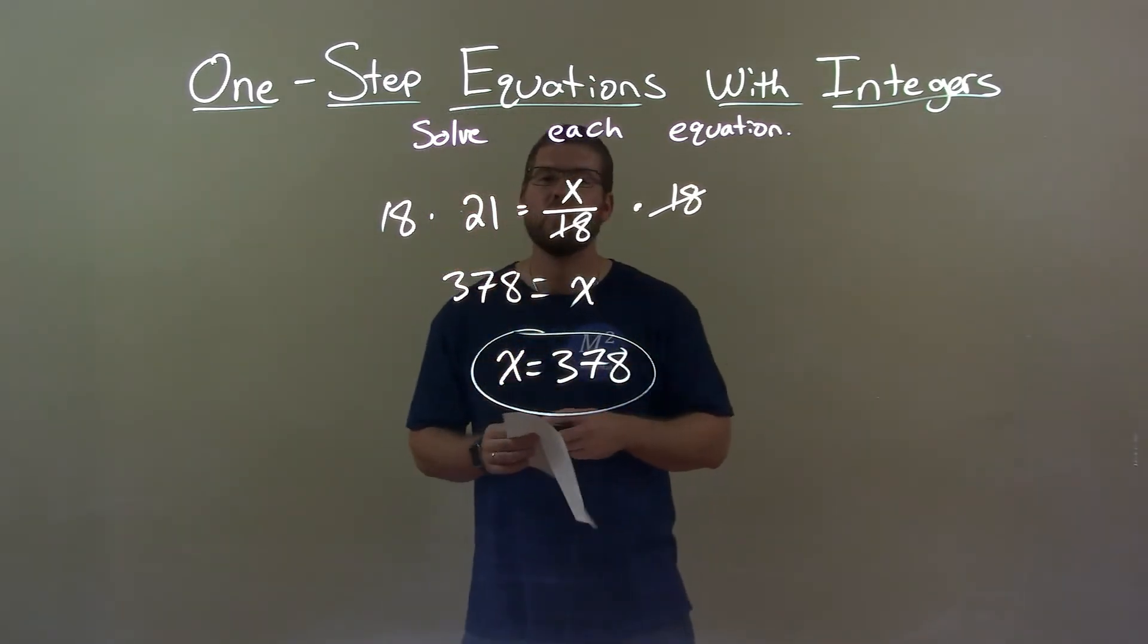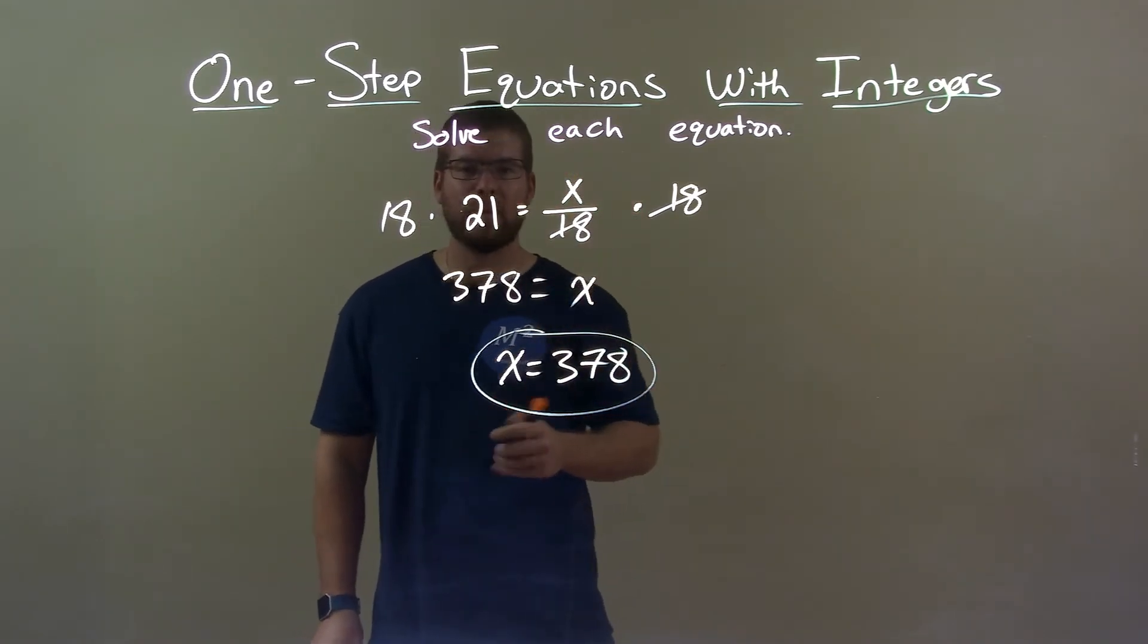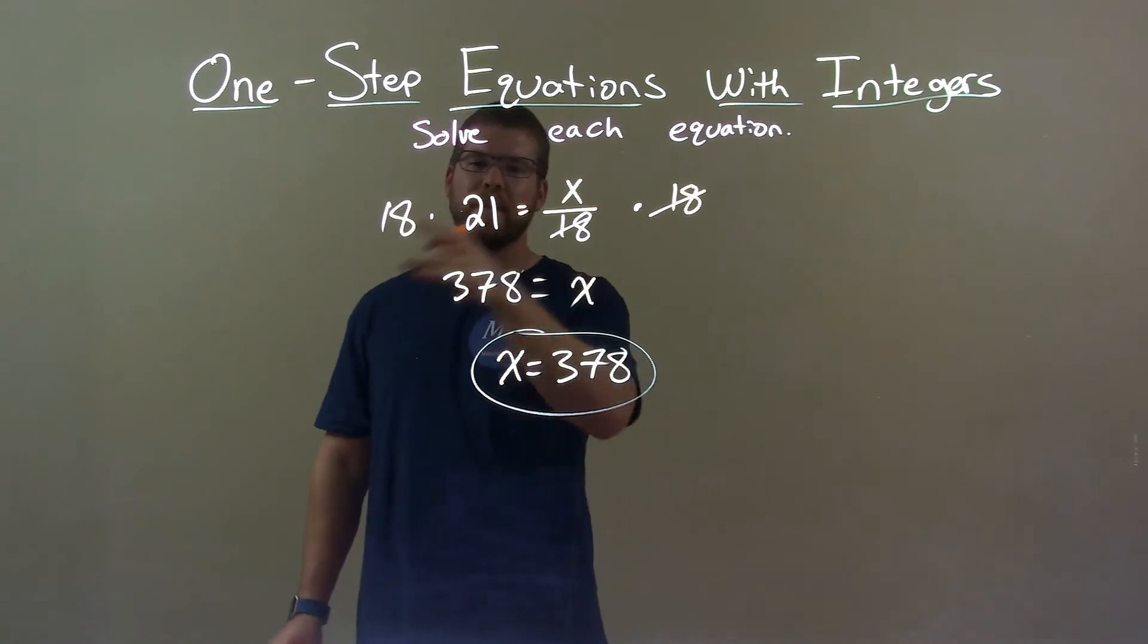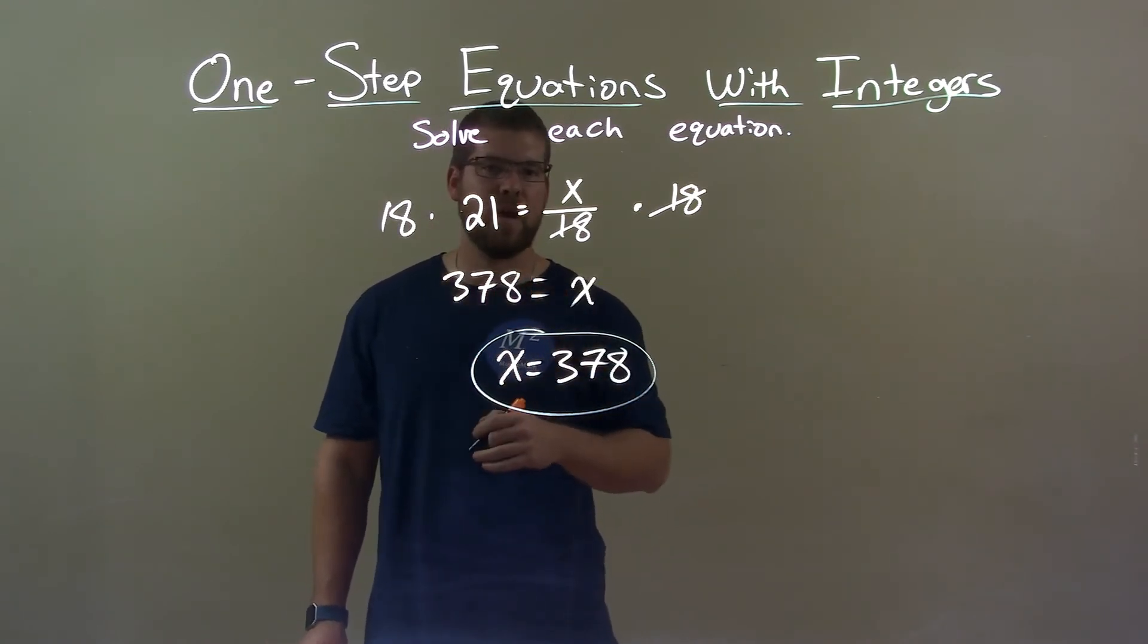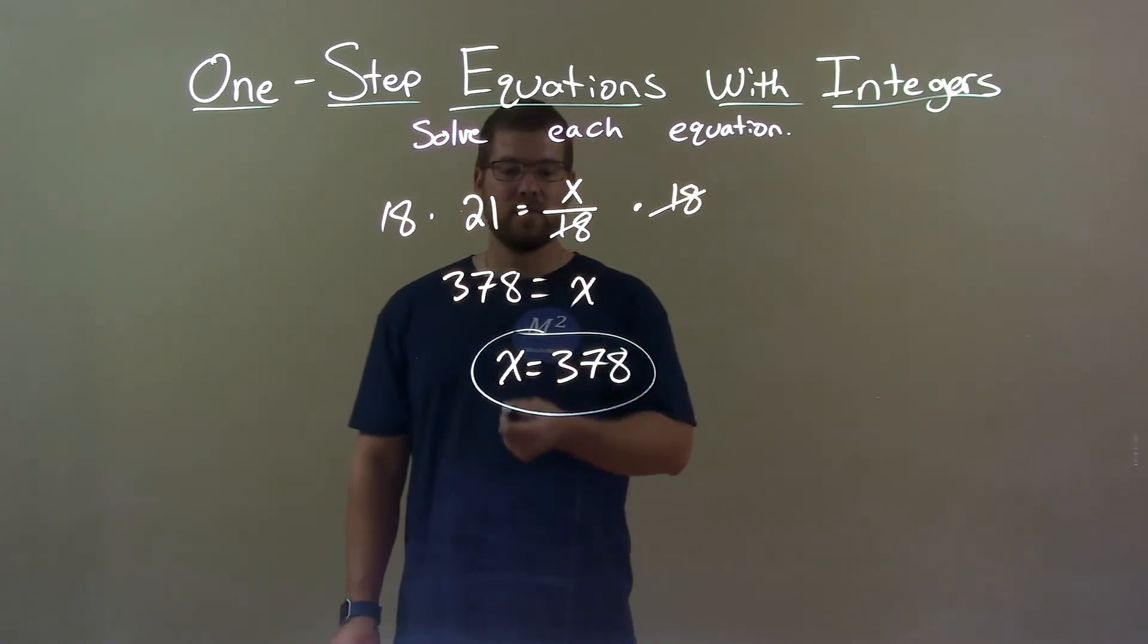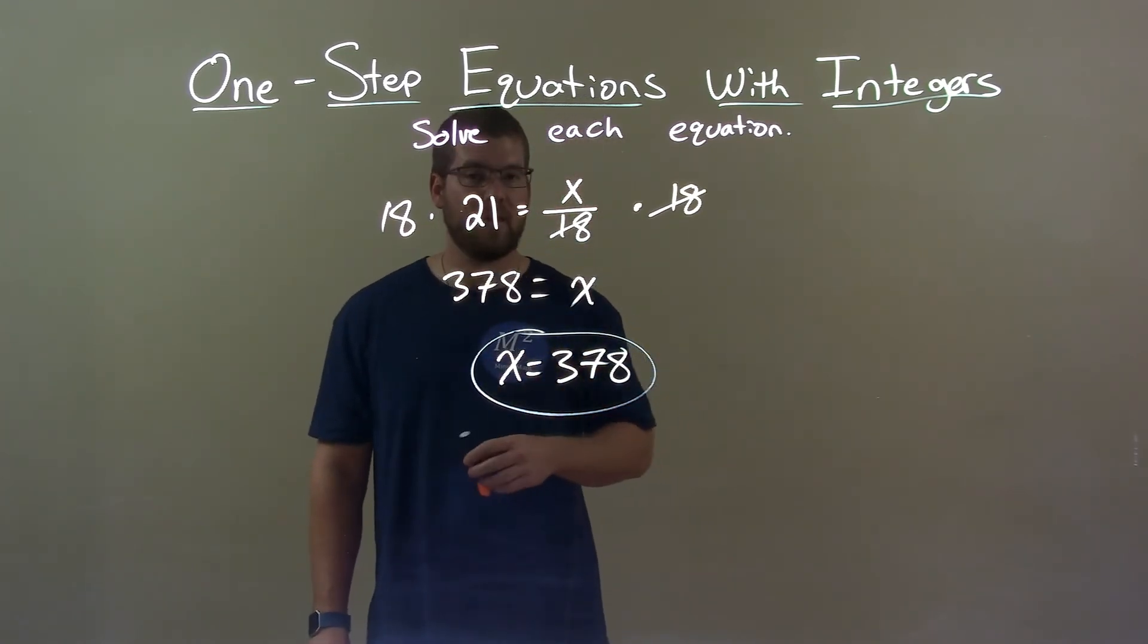Quick recap. We're given 21 equals x over 18, and we get to solve for x. Multiply both sides by 18, get x by itself on the right. 18 times 21 is 378. And that equals x, so we can rewrite it first, have x come first. So our final answer, x equals 378.